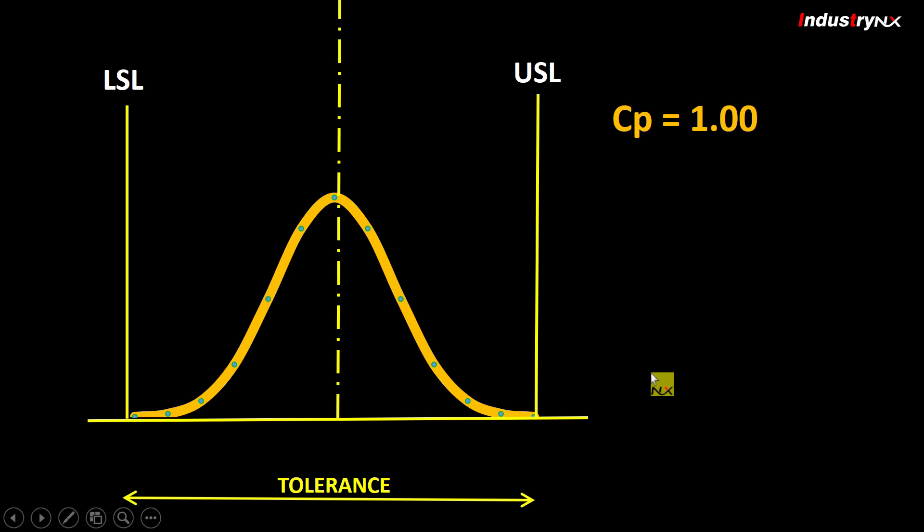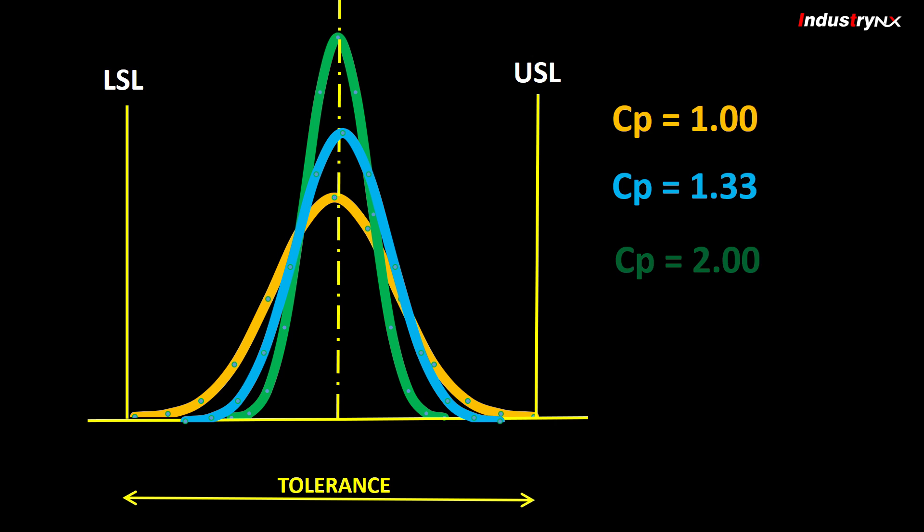Most of the companies keep CP target of minimum 1.33 or above. Hence, lesser variation as compared to 1 CP value. Most of the Japanese companies achieve and sustain CP value more than 2. This means lesser process variation and use of only 50% of total tolerance which is allowed by the designer.